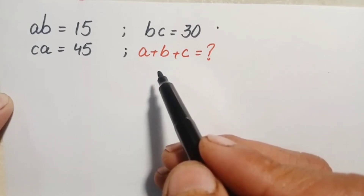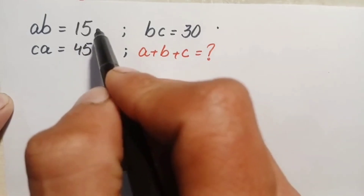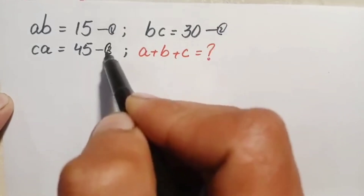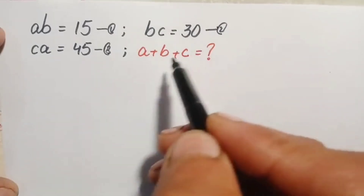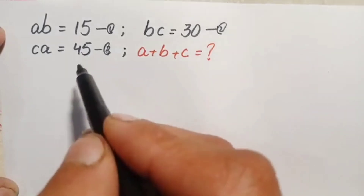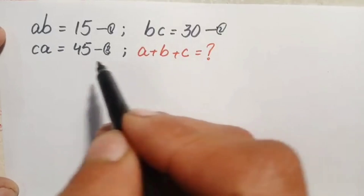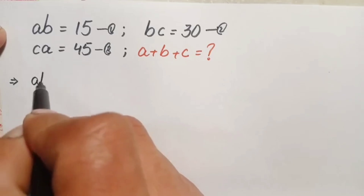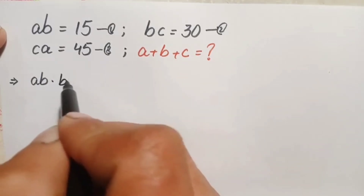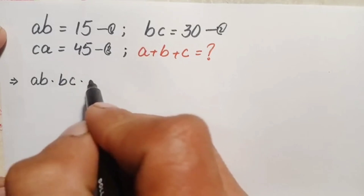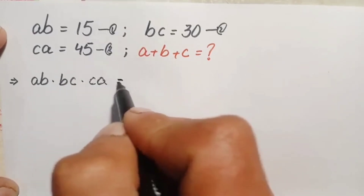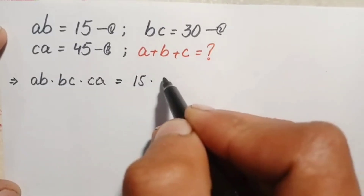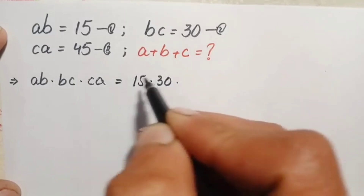Let us label these as equation number one, equation number two, and equation number three. We will multiply the left-hand sides of all three equations together and also the right-hand sides together. So the left-hand side becomes ab times bc times ca, and the right-hand side becomes 15 times 30 times 45.